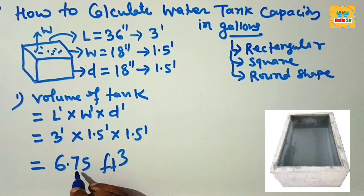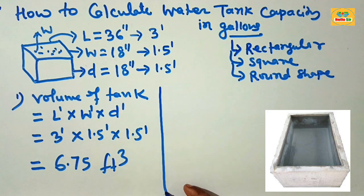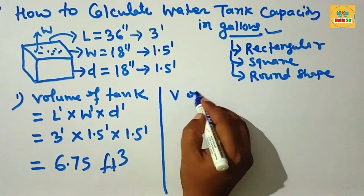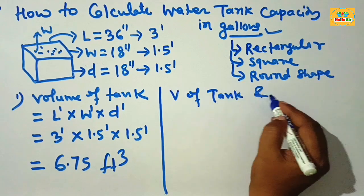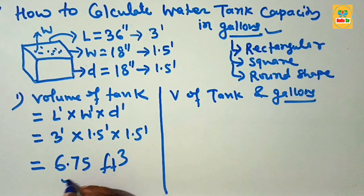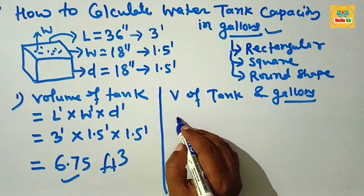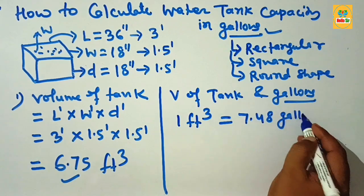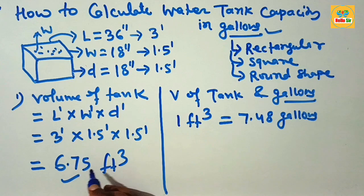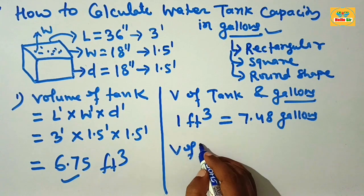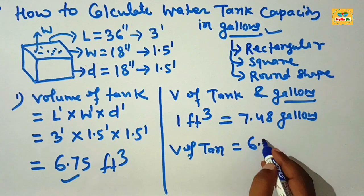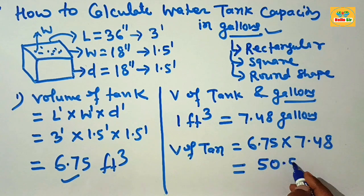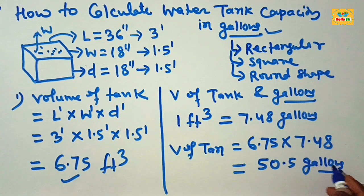If you multiply all these values, you get 6.75 cubic feet. This is the volume of water in cubic feet, but you have to convert this into gallons. One cubic foot is equal to 7.48 gallons. So, the volume of the tank in gallons is 6.75 multiplied by 7.48, which gives about 50.5 gallons.